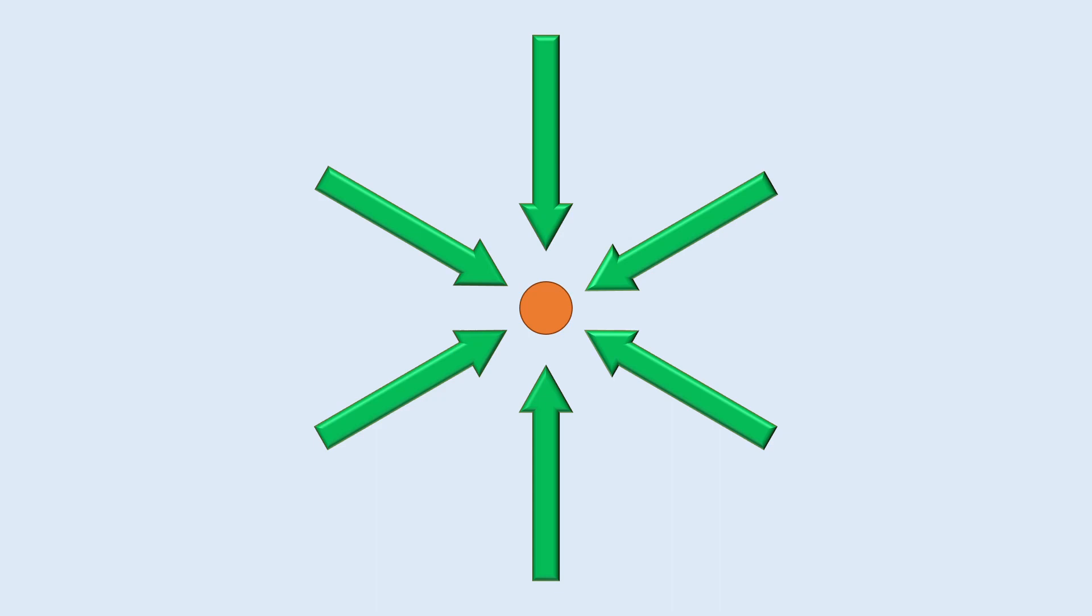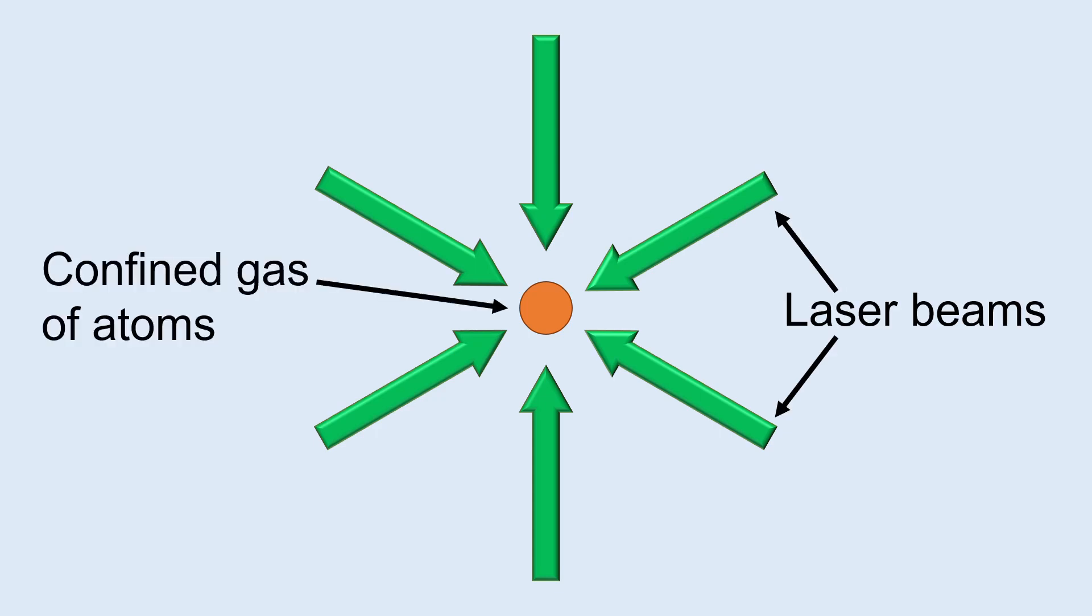One of the first proposed experimental setups made to cool a gas of atoms was done by Theodore Hansch and Arthur Schaulow in 1975. Their proposed experimental setup has three orthogonal pairs of laser beams incident on a confined gas of atoms. The laser beams are tuned to just below the resonance frequency of the atoms contained. This is because this method is making use of the Doppler effect to ensure only some atoms experience radiation pressure.